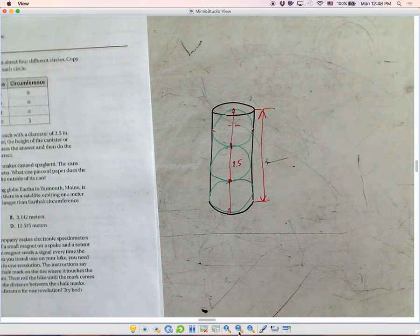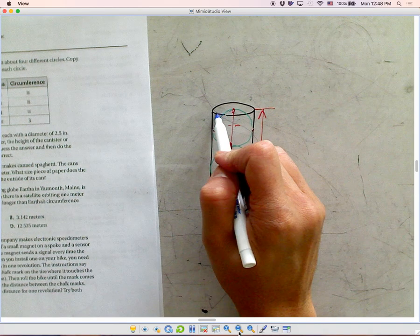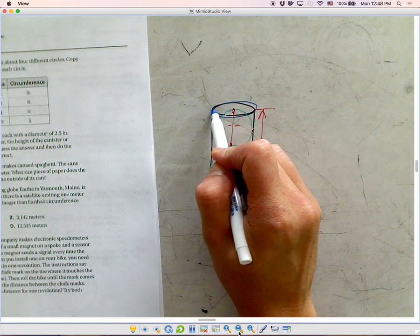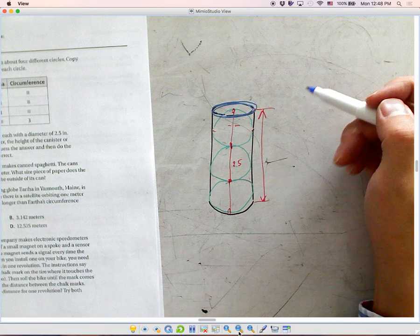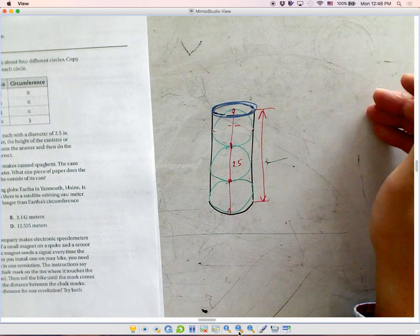And you compare that number to the circumference of this canister. Which one is bigger? Guess first and write the guess first, and then do the calculation.